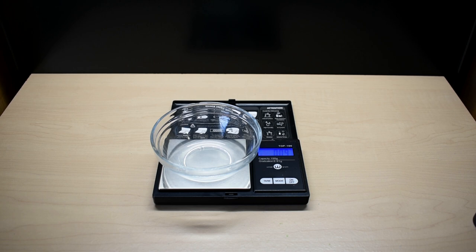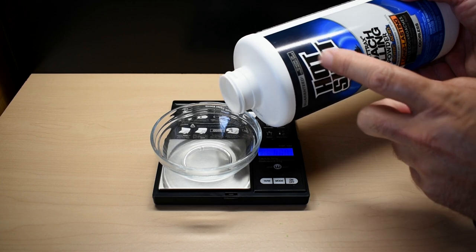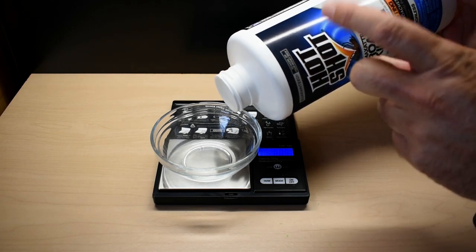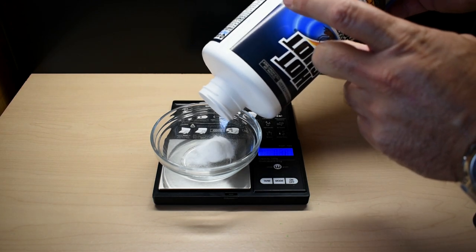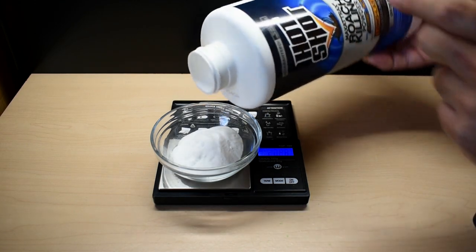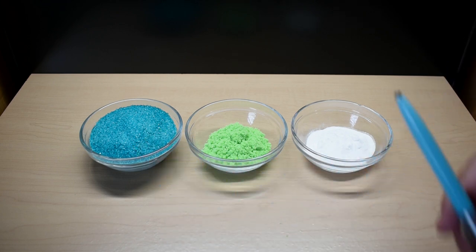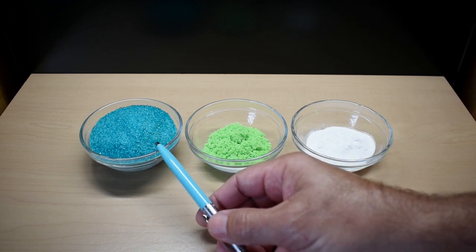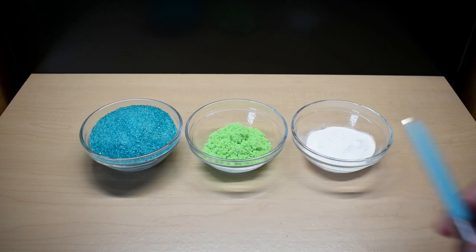We're going to be using boric acid. You want to tap this very lightly, you only need 20 grams. You don't want to create any dust. Keep it low and go slow. That's good, 20.6. And right here you can see all the chemicals ready to go. The 165 grams of nickel sulfate, 22.5 grams of nickel chloride, and 20 grams of boric acid.